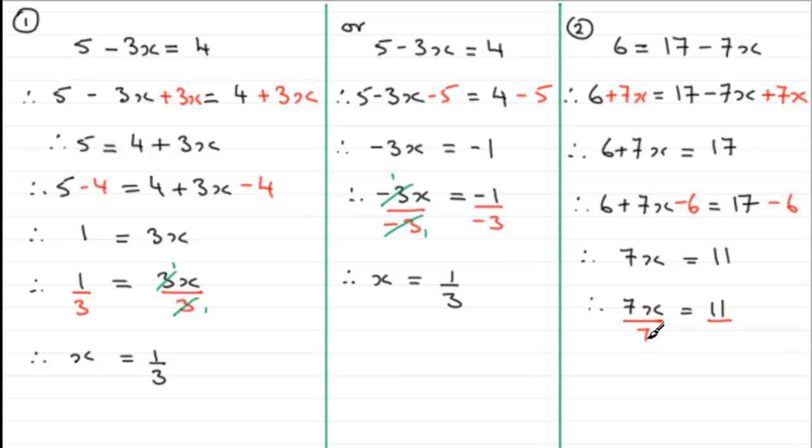So 7x divided by 7 just leaves us with x, and we have therefore x equals 11 sevenths. And 11 sevenths, well rather than turning that into a decimal, 7 goes into 11 once with 4 left over, so we're left with 1 and 4 sevenths.